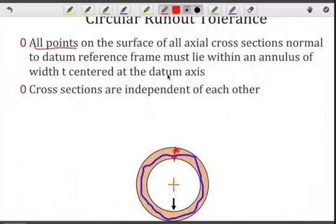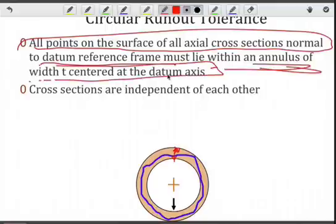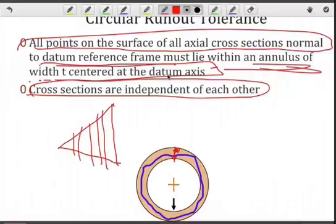So what we're saying here is all the points on the surface, if you think back to that needle gauge, for one specific cross section normal to the datum reference frame must lie within the annulus, again a width T. Note that the cross sections are independent of each other. For instance, if my part is conical in shape, then each cross section that we form a 2D annulus will obviously be different than the previous one. So they're considered to be independent and therefore not related to each other.